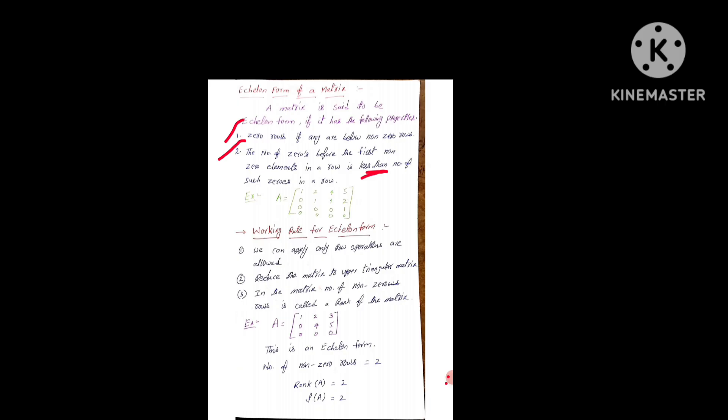Example for Echelon Form: A is equal to the matrix [1, 2, 4, 5 / 0, 1, 1, 2 / 0, 0, 0, 1 / 0, 0, 0, 1]. This is the form of Echelon Form.